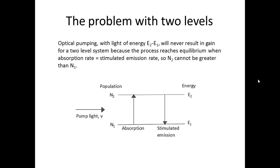So why don't we use a 2 level system? Well if we excite the atoms using a light pump, which can be a flash lamp, the system will reach an equilibrium where at best the absorption rate is equal to the rate of stimulated emission. In reality there is also spontaneous emission. So n2 will be less than n1, and population inversion can't be achieved.